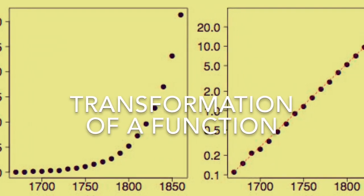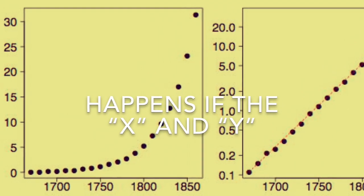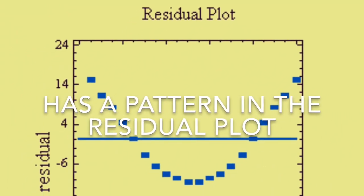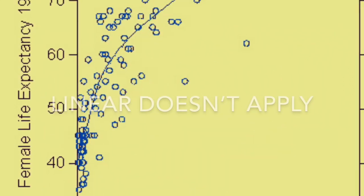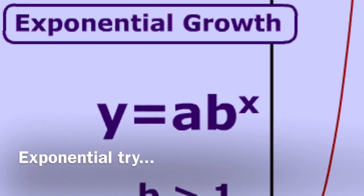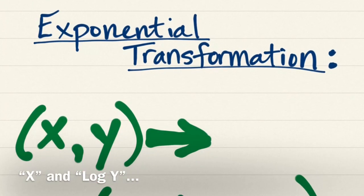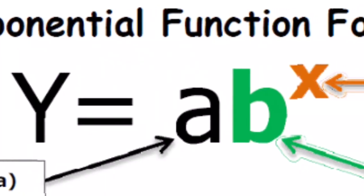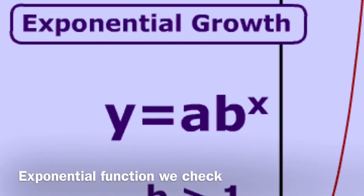Transformation of a function happens if the x and y has a pattern in the residual plot, and so linear doesn't apply. Exponential trial: x and log y, y equals ab to the x — exponential function we check.